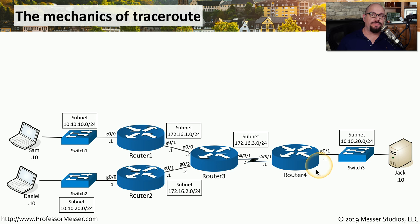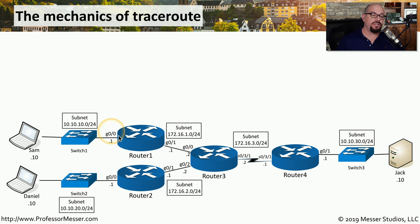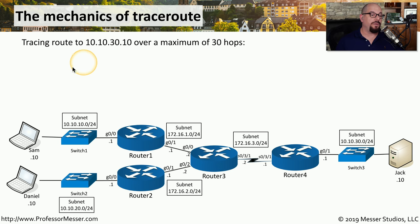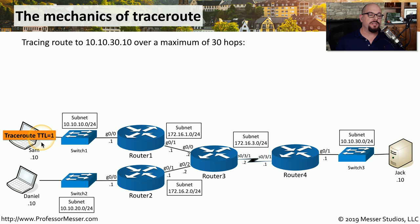Let's step through the process of how traceroute is really operating on the network, focusing on the broad view. Sam will be sending a traceroute to Jack. Sam is connected to a local switch, that switch is connected to a router, and there are multiple routers in between Sam and Jack. Once this hits Jack's network, there is a local switch there as well. We'll perform a traceroute on Sam's machine to 10.10.30.10, which is Jack's IP address. When you start traceroute, it gives a message saying it's tracing a route to that IP address over a maximum of 30 hops. The first packet sent from Sam's computer has a destination IP of Jack's computer, but with the time to live set to 1.